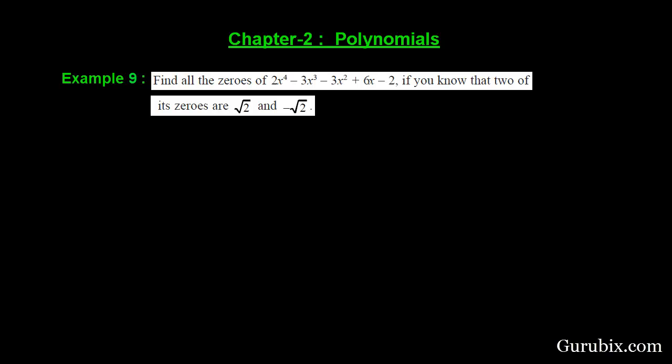Welcome friends. In this video we shall solve example number 9 of chapter 2 of class 10. The example is as follows: find all the zeros of a biquadratic polynomial 2x⁴ minus 3x³ minus 3x² plus 6x minus 2, given that two of its zeros are √2 and minus √2. This is a very important question from an examination point of view.